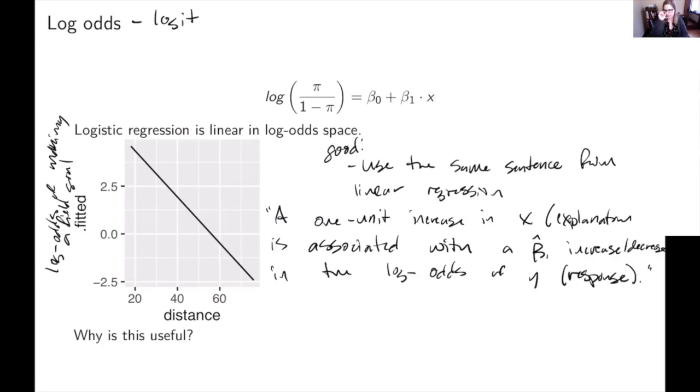So I took the units off of the beta one hat there because I actually don't know what the units are once you have the log odds. I think it's just log odds of whatever. So that's good because you get to use the same sentence, but it's bad because the sentence doesn't make much sense to most people. It doesn't make intuitive sense. So most humans don't have a sense for what it means for your log odds to go down in this case. So for a one yard increase in distance, the log odds go down by however much the slope is. And we don't know how big that is, like if that's a big deal or not. So this one is not super useful in that way.